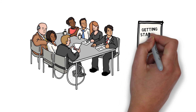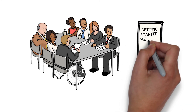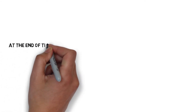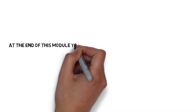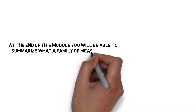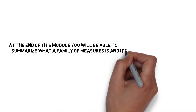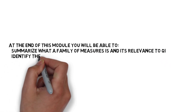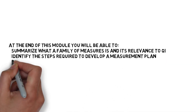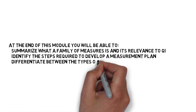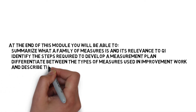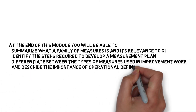This module provides information on getting started with measurement for QI. At the end of this module you will be able to summarize what a family of measures is and its relevance to QI, identify the steps required to develop a measurement plan, differentiate between the types of measures used in improvement work, and describe the importance of operational definitions.